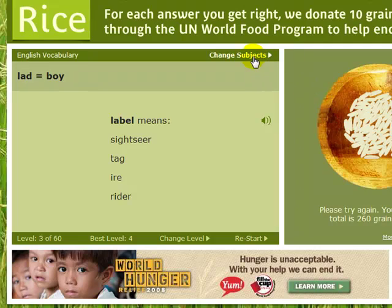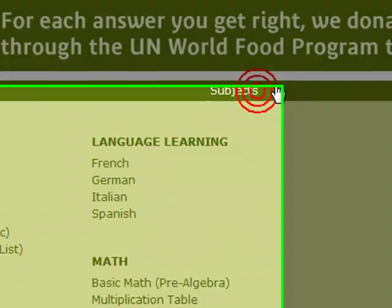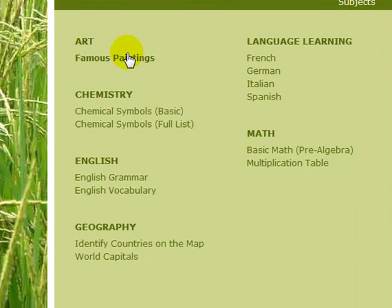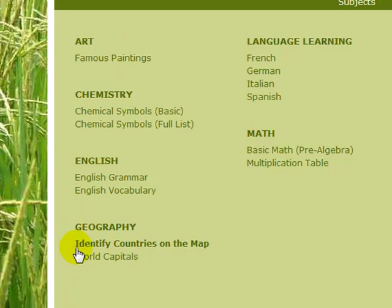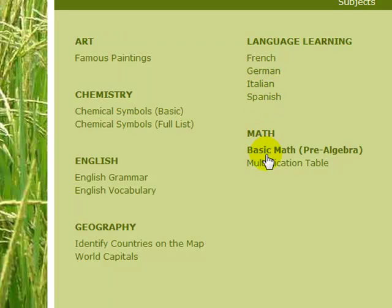If you want to change subjects, you can go over here. It offers: art — famous paintings; chemistry symbols; English — grammar or vocabulary; geometry; identifying countries on a map; world capitals; language learning — French, German, Italian, and Spanish; and math — basic math, pre-algebra, and multiplication tables.